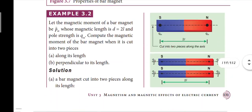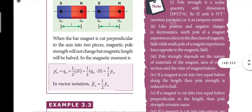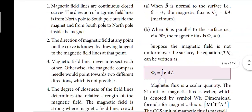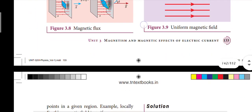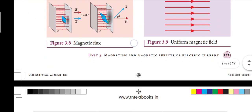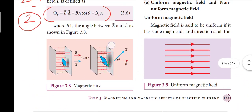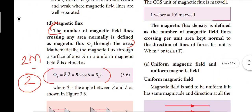Next, page number 133: magnetic flux. The number of magnetic field lines crossing any area normally is defined as magnetic flux. Magnetic flux is equal to B·A·cosθ — B perpendicular into the area.